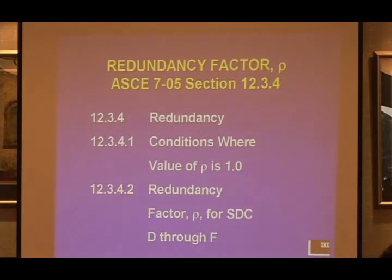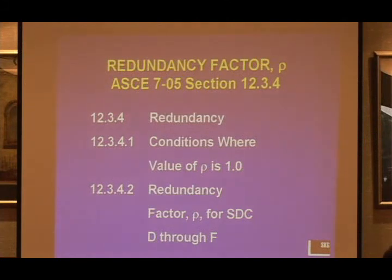Section 12.3.4 has all of the redundancy provisions in it. It's organized in this way: 12.3.4.1 outlines where you do not have to use the redundancy. If you have a redundancy factor of 1.3, you're going to be increasing your base shear by 30%. The code has a user-friendly feature where it tells you specifically where you do not need to consider the redundancy factor. Hopefully we'll get to that point with the special seismic load combinations and the over-strength factor load combinations, because right now you have to hunt throughout the code to find where you have to use the over-strength factor — and that's not really fair to the code user.